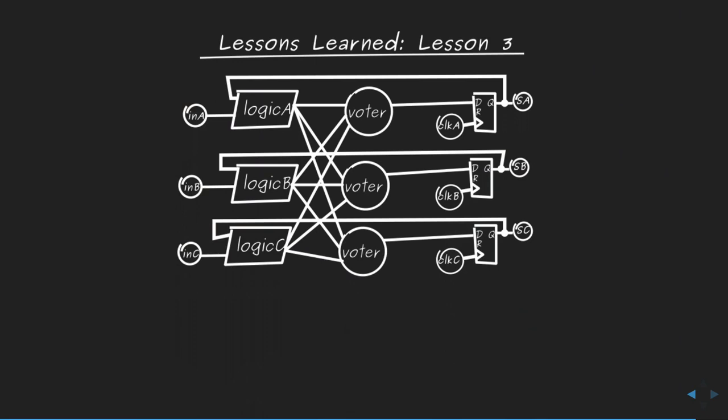Q: How do you handle register duplication performed by synthesis and place-and-route tools for timing optimization? A: In a standard ASIC design flow, retiming must be explicitly instructed. For radiation-hardened designs, the synthesis tool is instructed not to perform such optimizations — all registers described in the RTL code must be preserved to the very end, and their associated logic must remain triplicated.